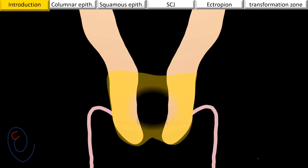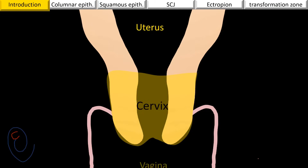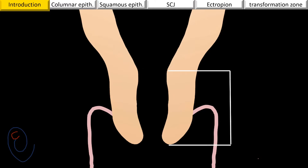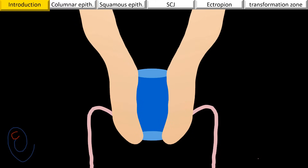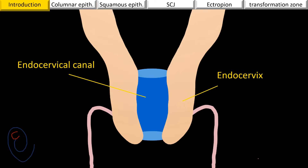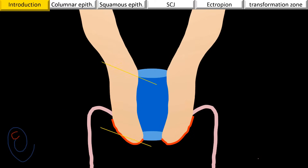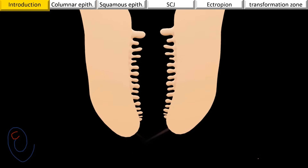The cervix is a fibromuscular organ connected between the uterus and the vagina. It measures about three to four centimeters in length and about 2.5 centimeters in diameter. There is a canal inside the cervix called the endocervical canal. The cervical tissue surrounding the endocervical canal is called the endocervix. The ectocervix is the outer part of the cervix protruding inside the vaginal lumen. The opening between the cervix and uterus is called the internal os, while the external os is the opening between the cervix and the vagina. The inner surface of the endocervix is irregular.